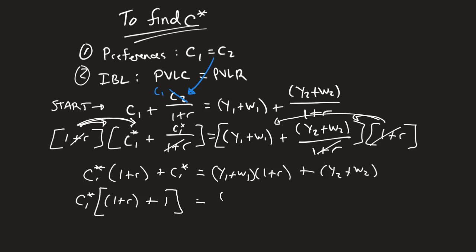C1 equals, everything over here is the same, Y1 plus W1 times 1 plus R plus Y2 plus W2. Now what exactly is this? This right here, I've got a 1 plus R plus 1. This is actually 2 plus R.